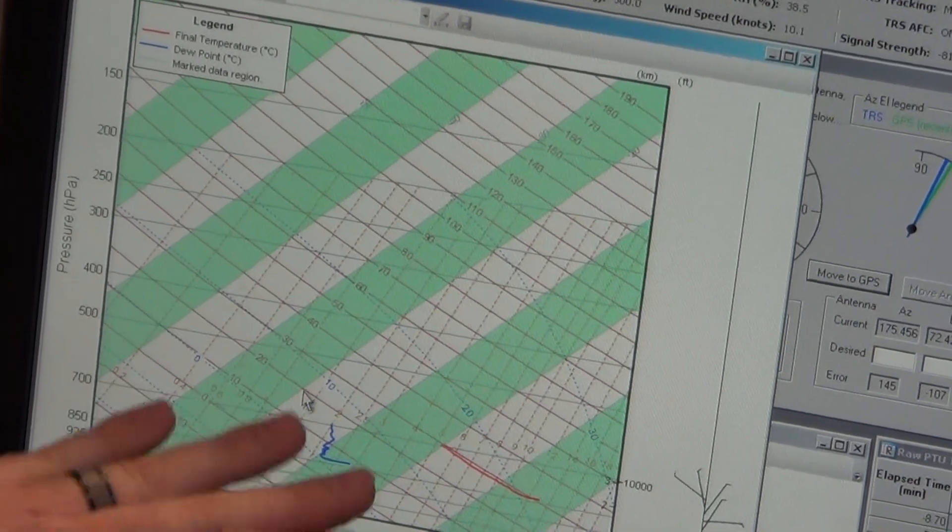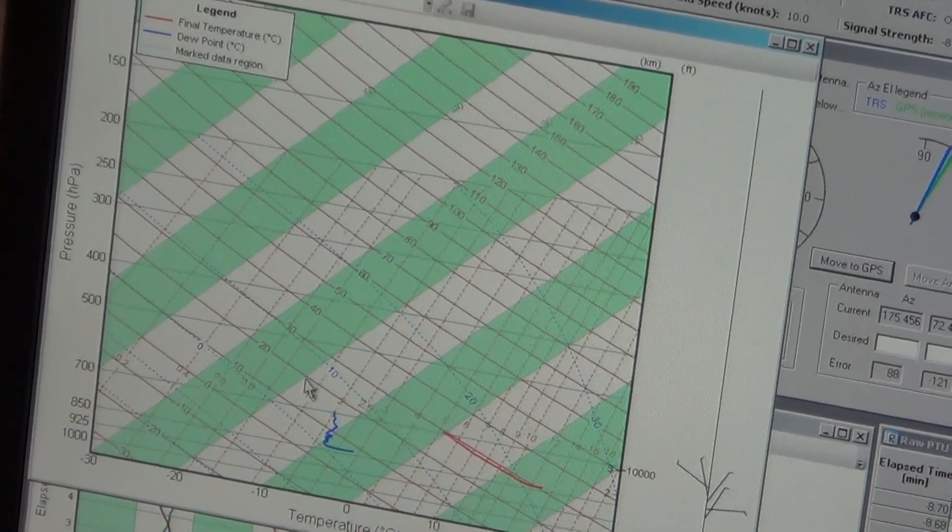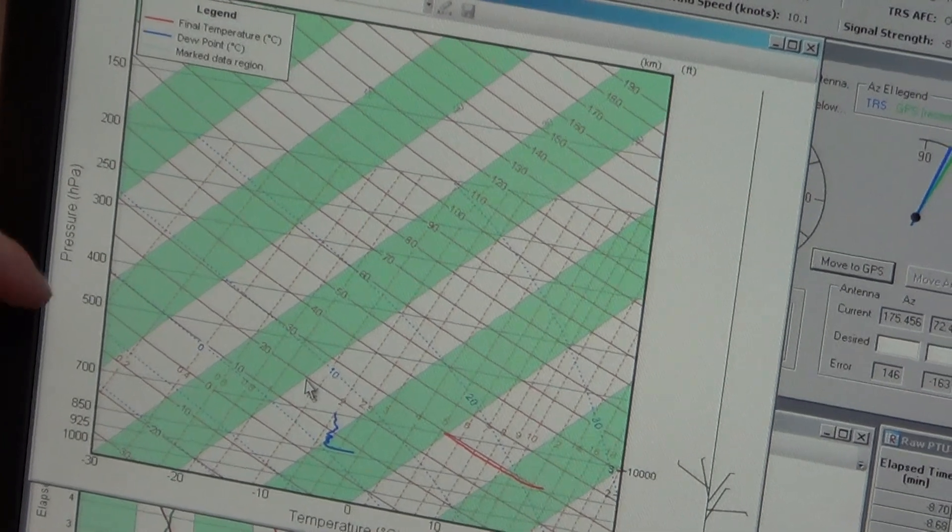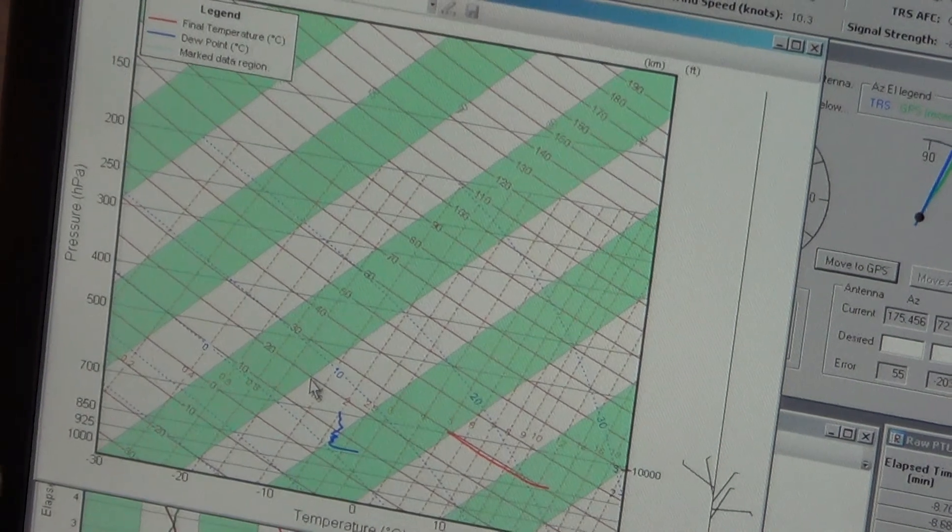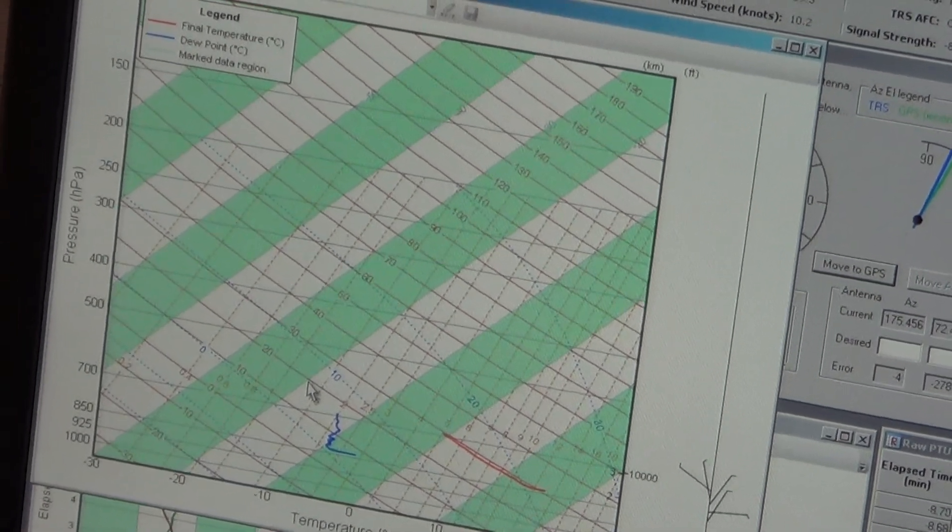Basically, this will just keep recording. Our minimum height in the atmosphere is 400 millibars. And that's considered a successful launch. But it can go all the way up to less than 10 millibars, or as we said, 100,000 feet.